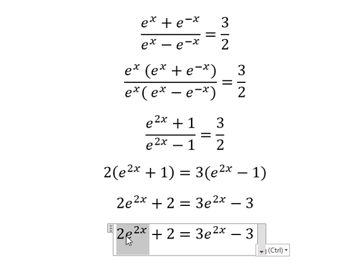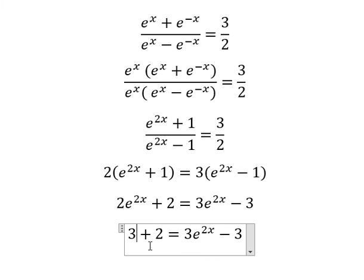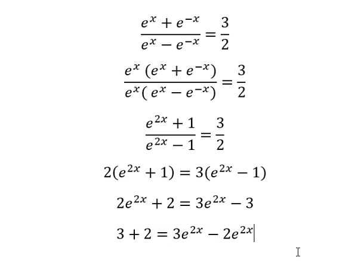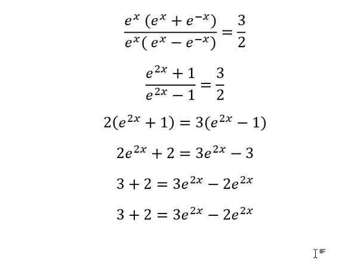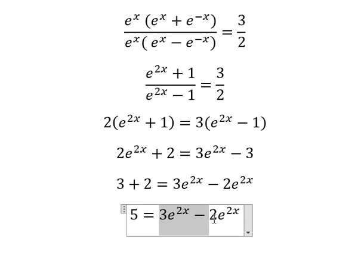So number 2 we put on the right. Number 3 we put on the left. We have positive number 3. This one we have minus number 2 e to the power of 2x. So this one we have number 5. This one we have number 1.